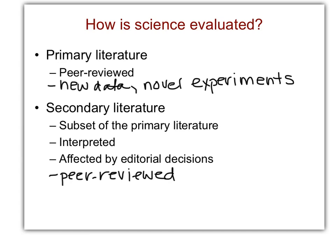There are two different ways of what we would say is information that we would trust. The first one is primary literature, and the second is secondary literature. Primary literature is peer-reviewed, which means it's reviewed by other scientists — experts in your field. It's made up of new data, new experiments, novel experiments that have never been done by anybody else. Those sorts of things are in specific scientific journals with all the gory details involved in that experimentation.